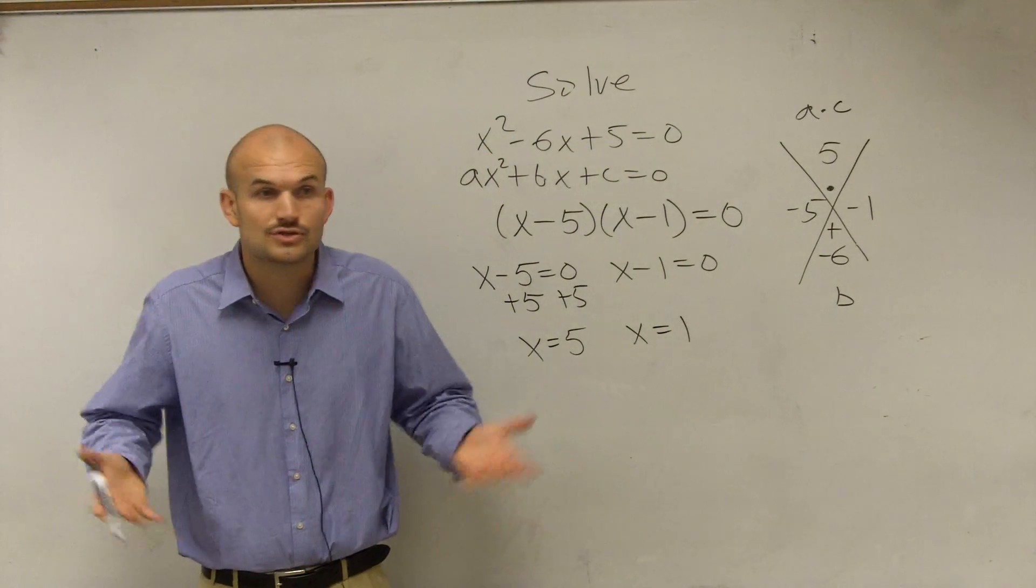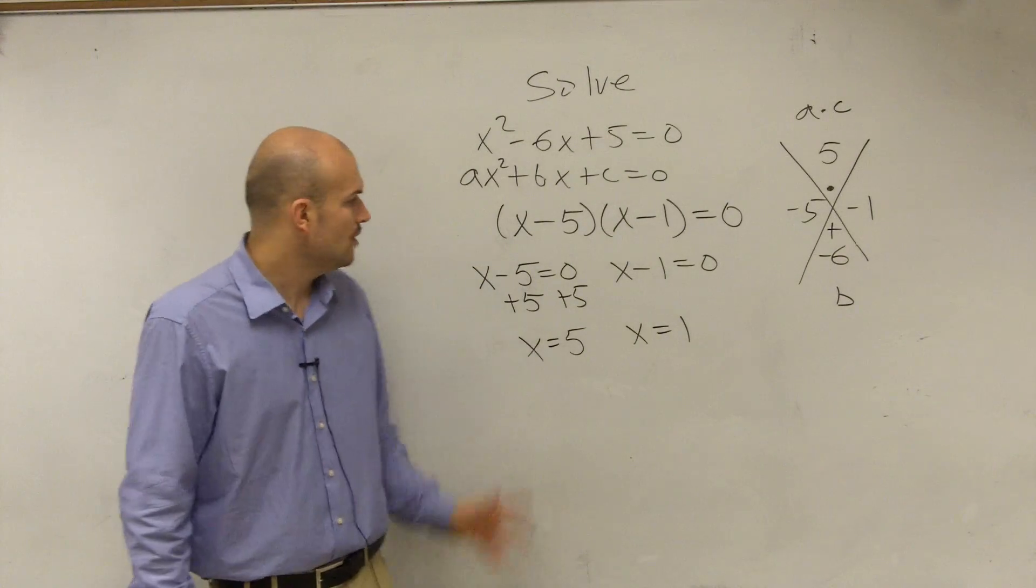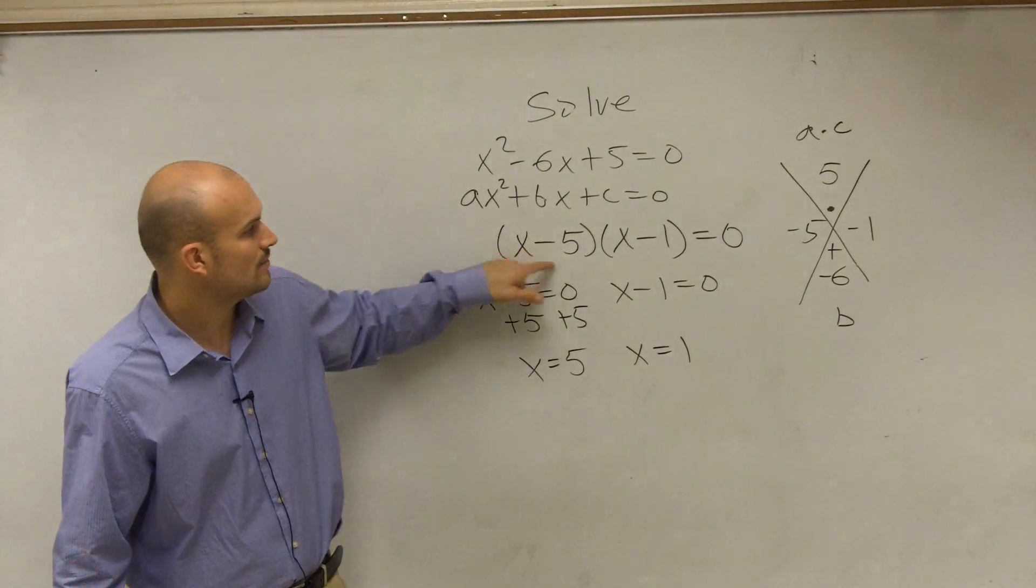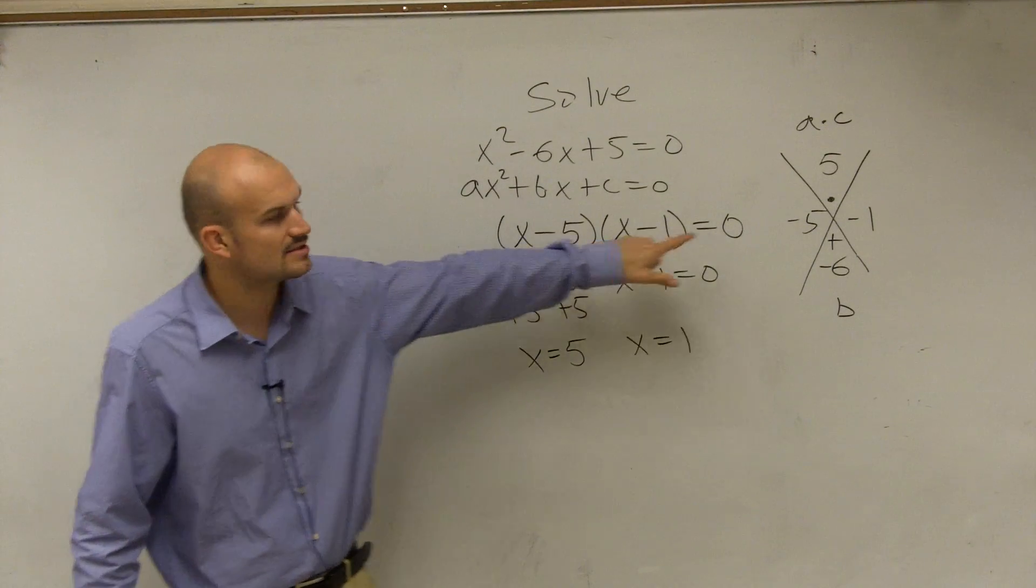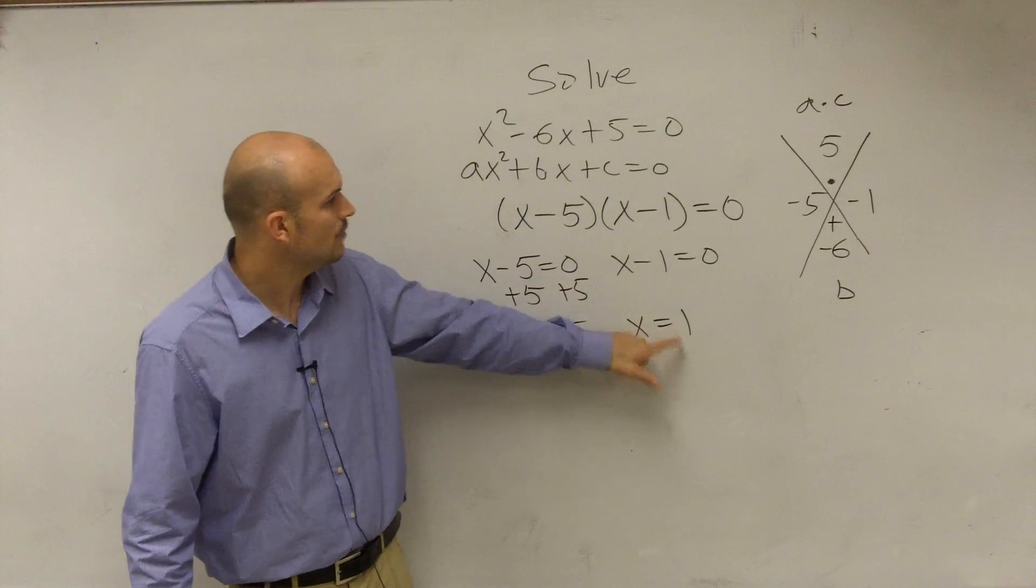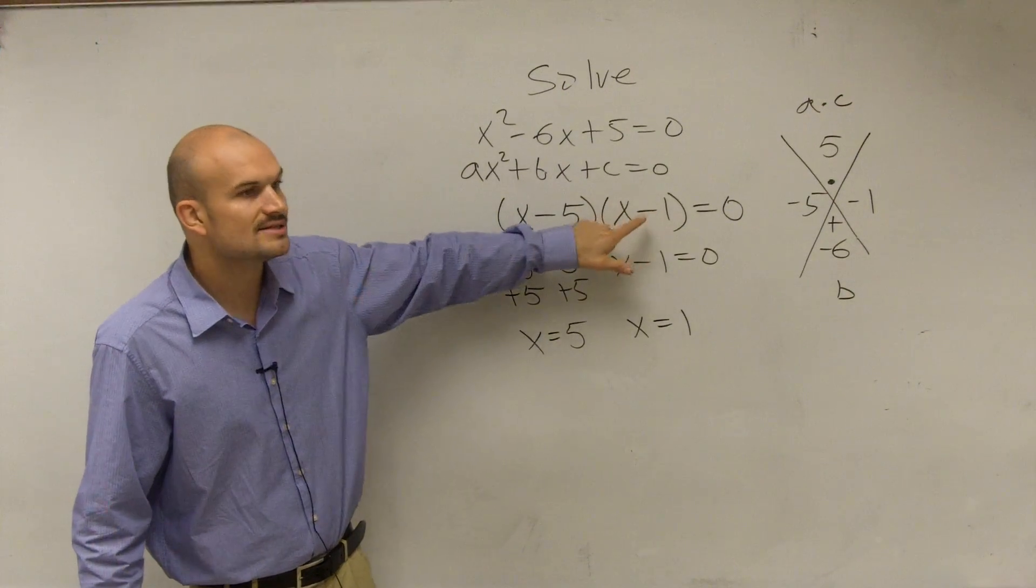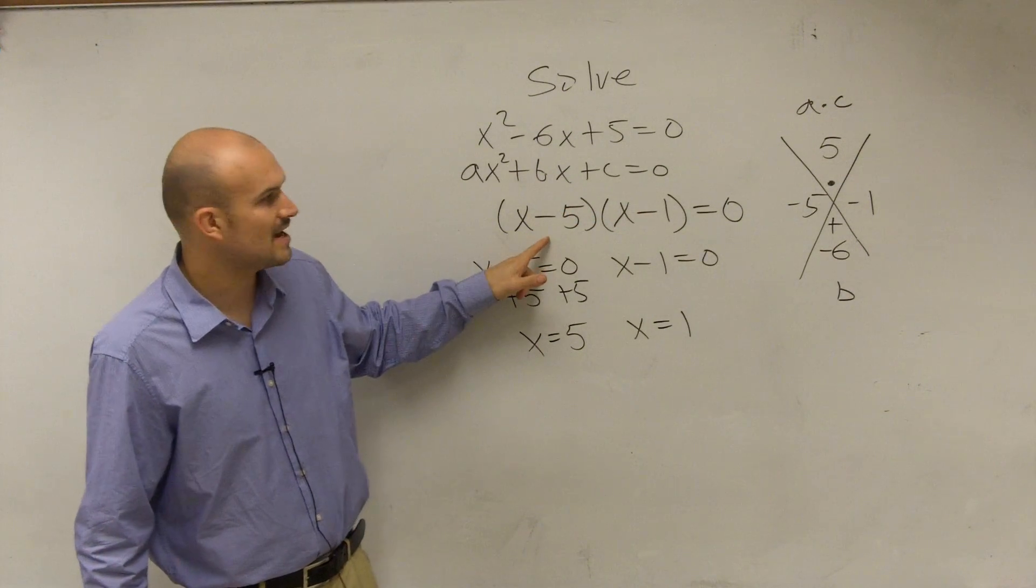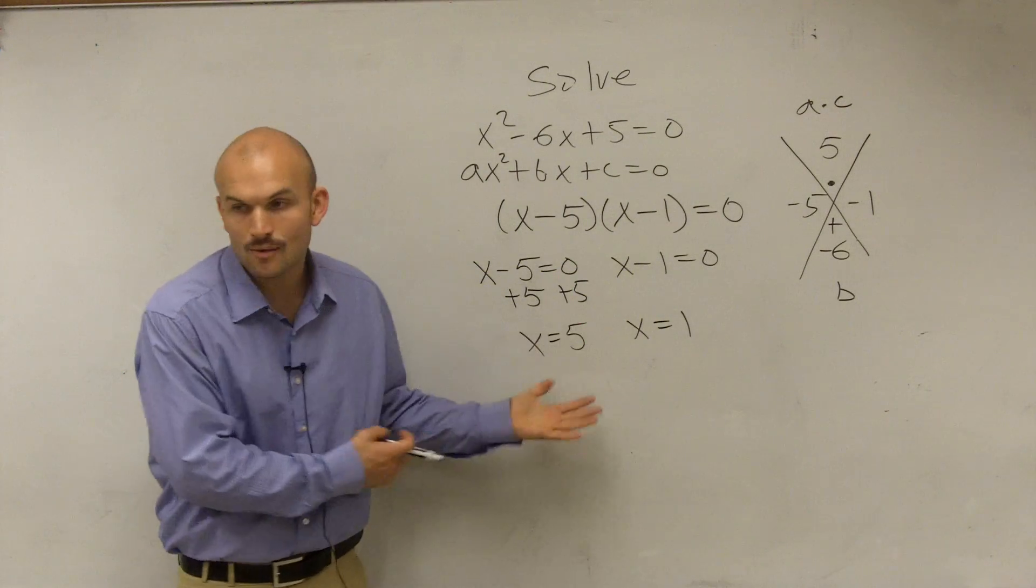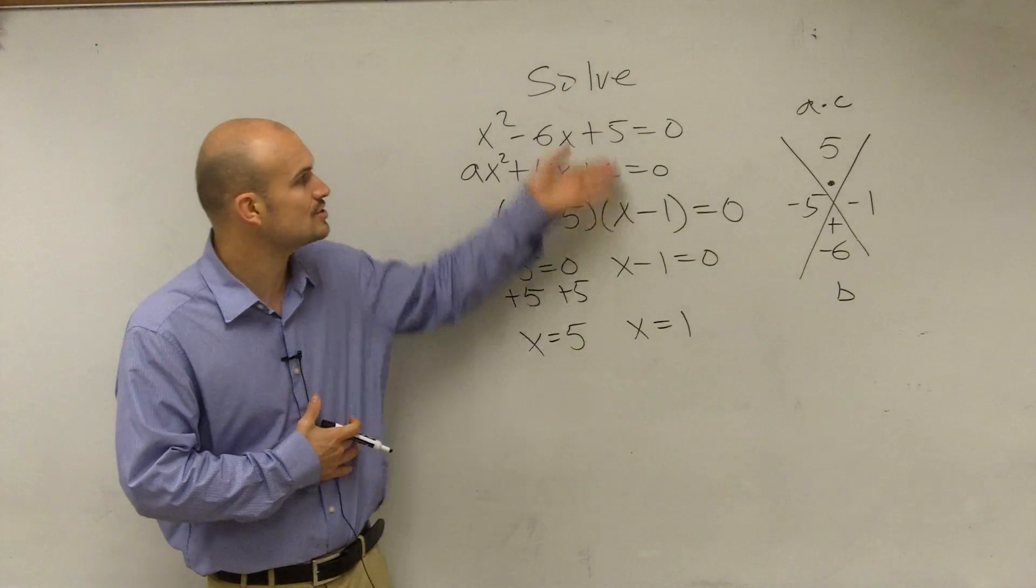Now, are those solutions to our equation? Do those make our equation true? Well, let's plug them back into the factored form. 5 minus 5 is 0. 0 times x minus 1 is 0. It's true. It makes the solution true. 1. 1 minus 1 is 0. 0 times x minus 5 is 0. 0 equals 0. Again, now we have found two solutions to the equation.